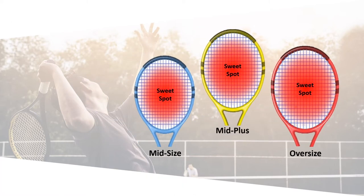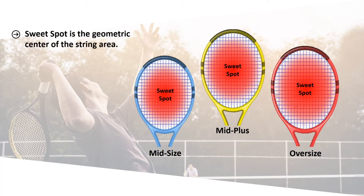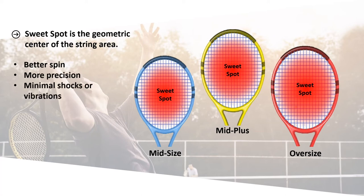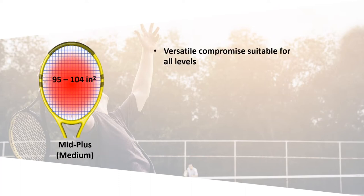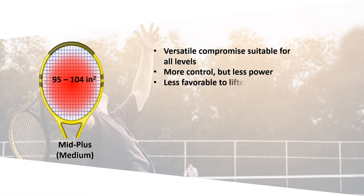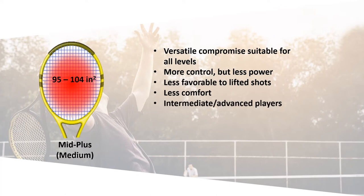The sweet spot can be defined as the geometric center of the string area. The larger the racket, the larger the sweet spot. This is the area that allows for the best spin with power and more game precision while generating the minimum shocks or vibrations for the player. The average sweet spot area ranges from approximately 95 to 104 square inches. Rackets with a medium sweet spot are a versatile compromise suitable for all players — they allow more ball control while allowing less power, are less favorable to lifted shots, and are less comfortable. They are ideal for intermediate and advanced players.